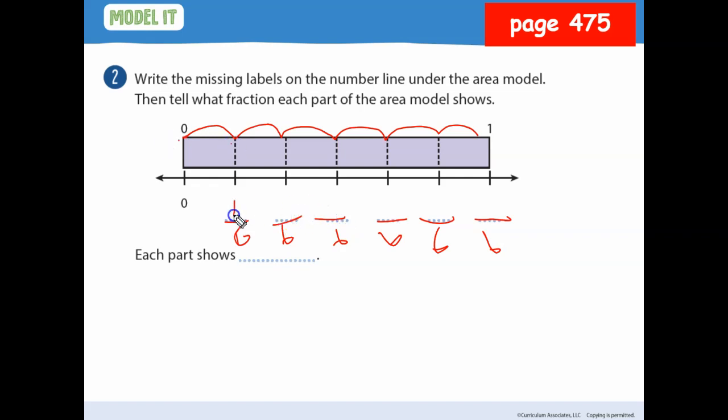So I go zero to the first one, that's one sixth, two sixths, three sixths, four sixths, five sixths, and six sixths. What each part shows, well, my denominator is six in each part. My unit fraction, is what they call it, is one sixth. So that means it's one sixth here, one sixth here, one sixth here, one sixth here, and one sixth here.